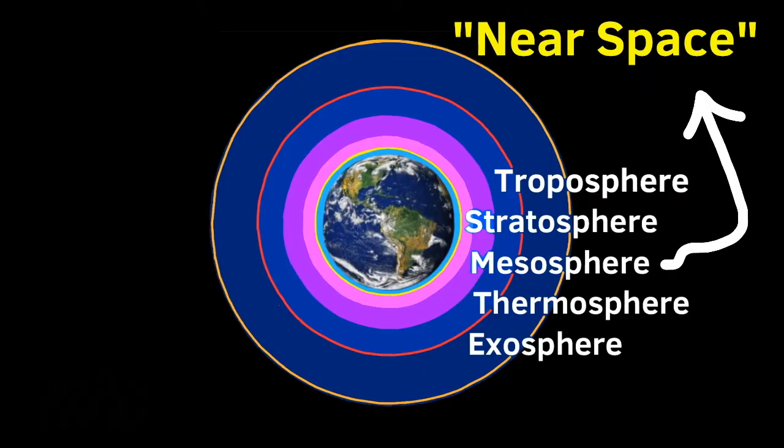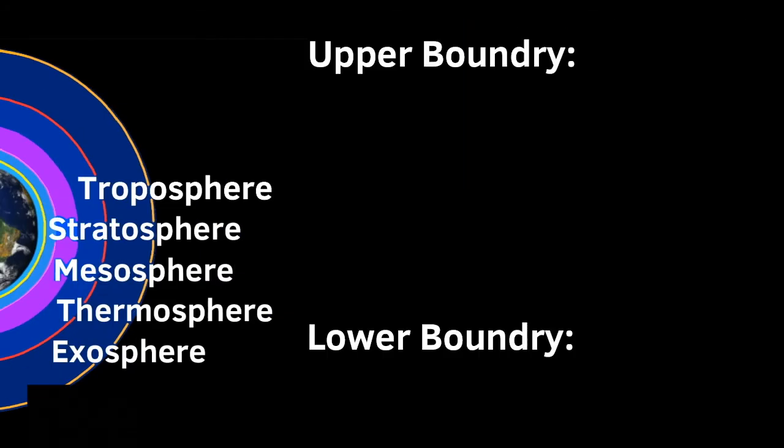Parts of the mesosphere are referred to as near space. The upper boundary varies from 85 kilometers to 100 kilometers.